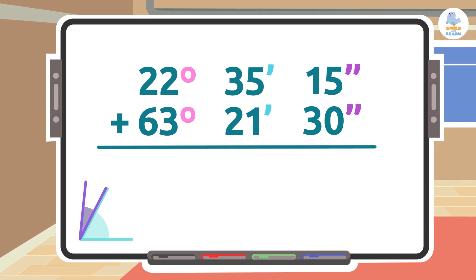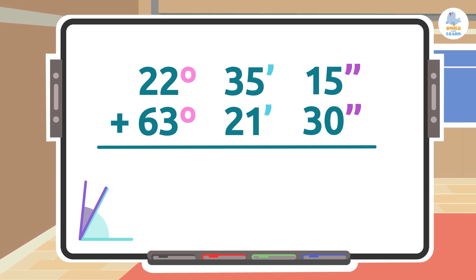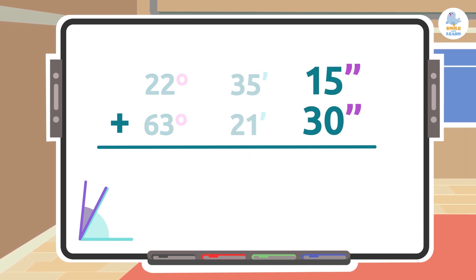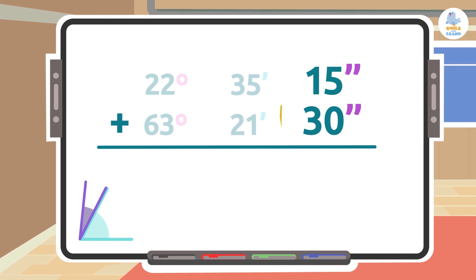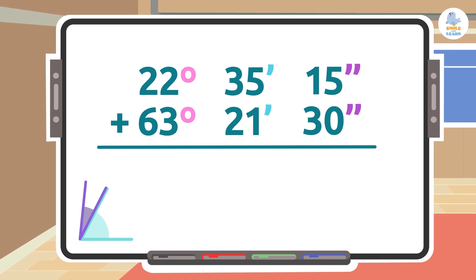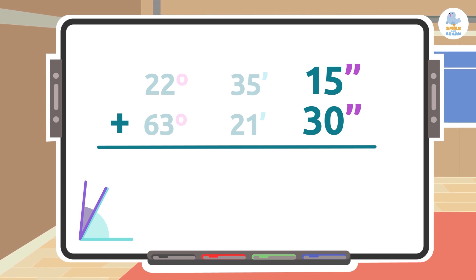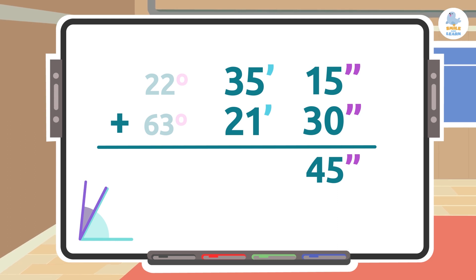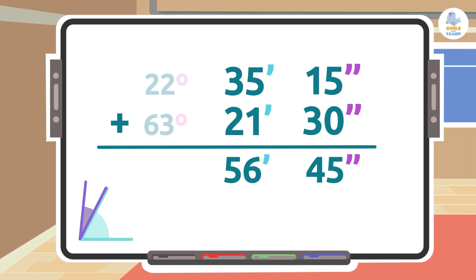The first step is to put the angle measurements we want to add one below the other, just like regular addition. But be careful — the numbers have to match exactly. That means degrees go under degrees, minutes go under minutes, and seconds go under seconds. Once we have placed the angles correctly, we have to add each column separately. We'll start by adding the seconds: 15 seconds plus 30 seconds is 45 seconds. Now we'll add the minutes: 35 minutes plus 21 minutes is 56 minutes.